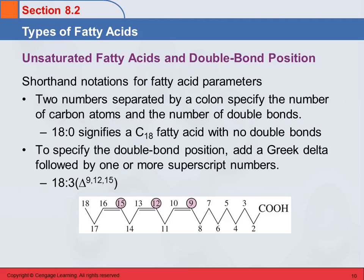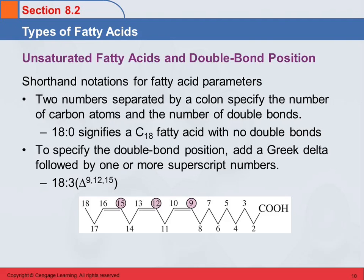In these unsaturated fatty acids, the position of the double bond is important. There are two different shorthand notations for specifying the number of double bonds and their position. If we use two numbers separated by a colon, such as 18:0, the first number tells us how many carbon atoms are in the fatty acid, and the second number tells us how many double bonds. This doesn't tell us where the double bond might be. So 18:0 signifies a C18 fatty acid with no double bonds. If we want to specify where the double bonds are — for example, 18:3 would be 18 carbons containing three double bonds — then in parentheses we put the Greek letter delta, and as a superscript we put the carbon numbers where the double bonds start.